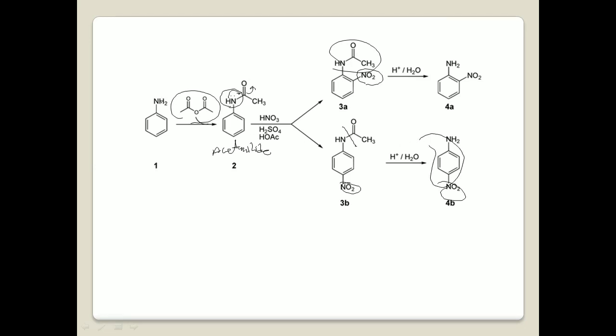Because direct nitration of aniline gives different products, but by first converting to acetanilide — where the nitrogen is less basic — protonation is not considerable. That's why we get ortho and para products, with para formed in the major quantity. So para-nitroaniline is obtained in major yield via this route.